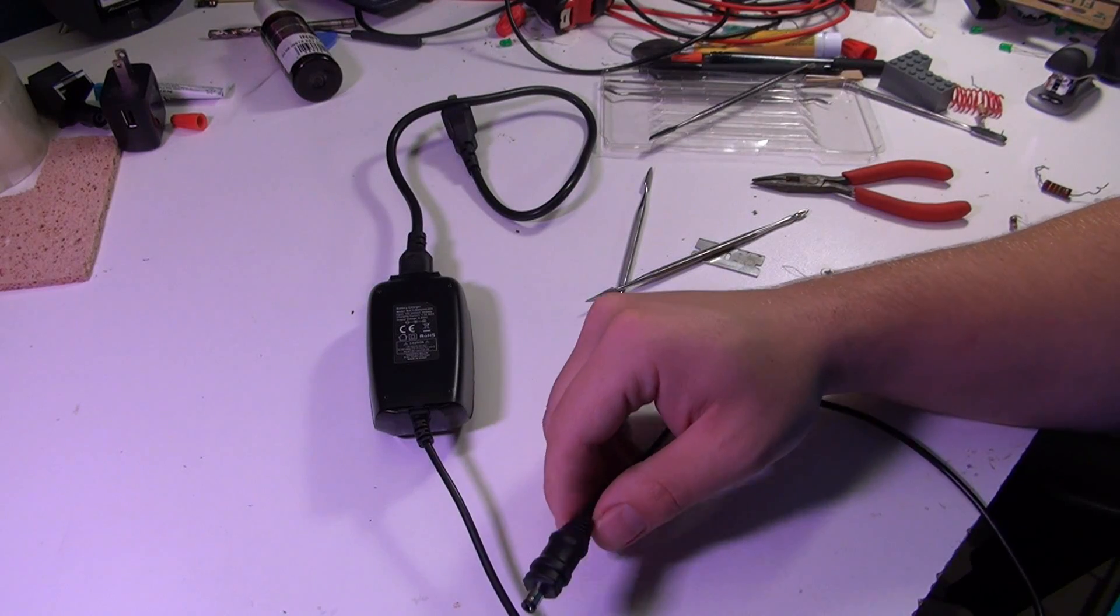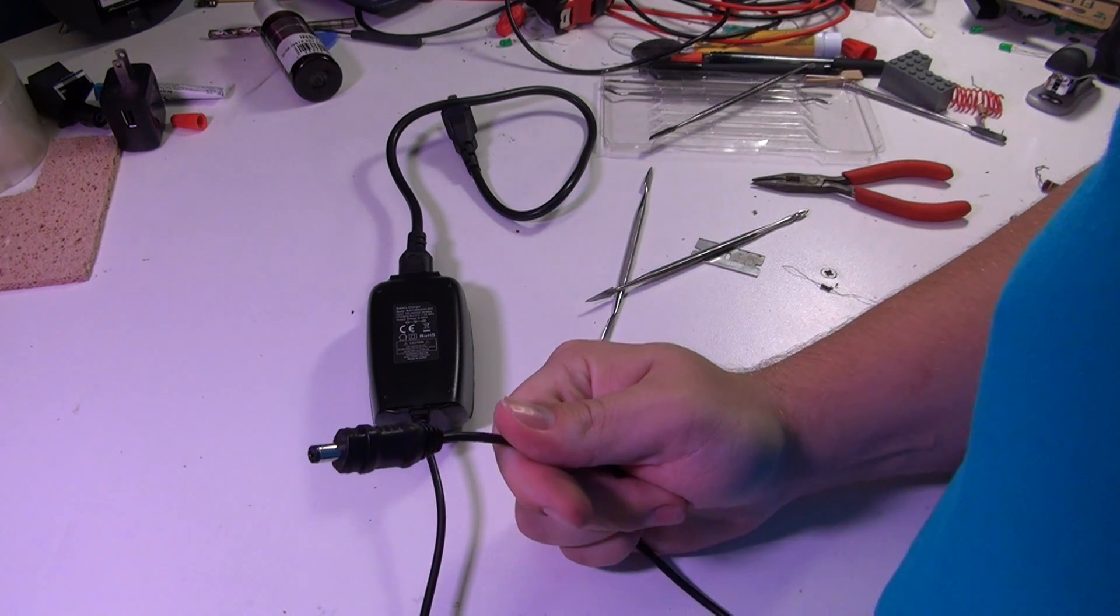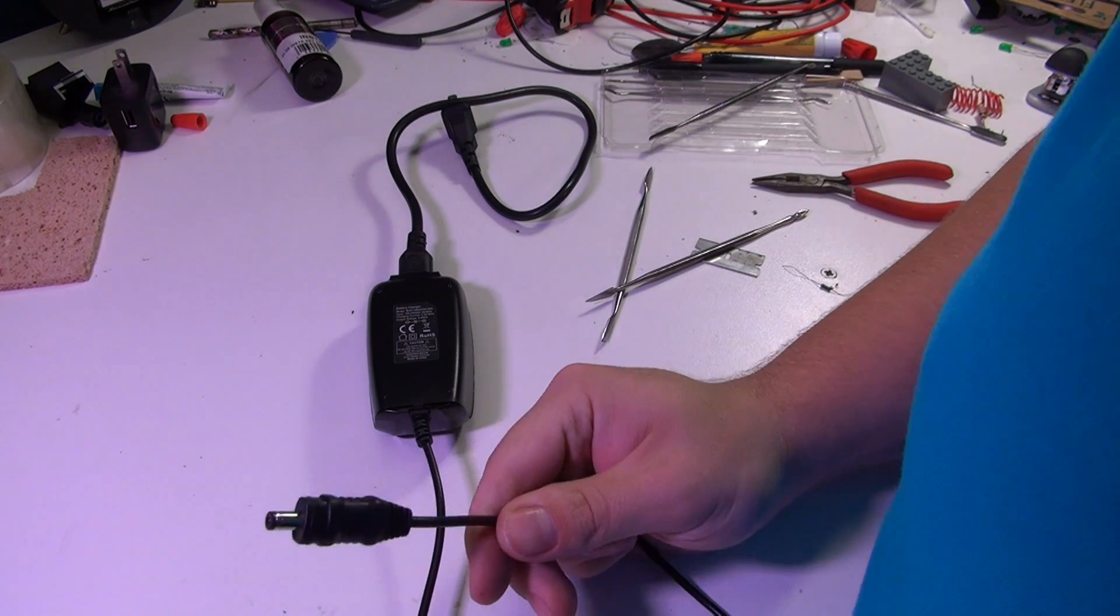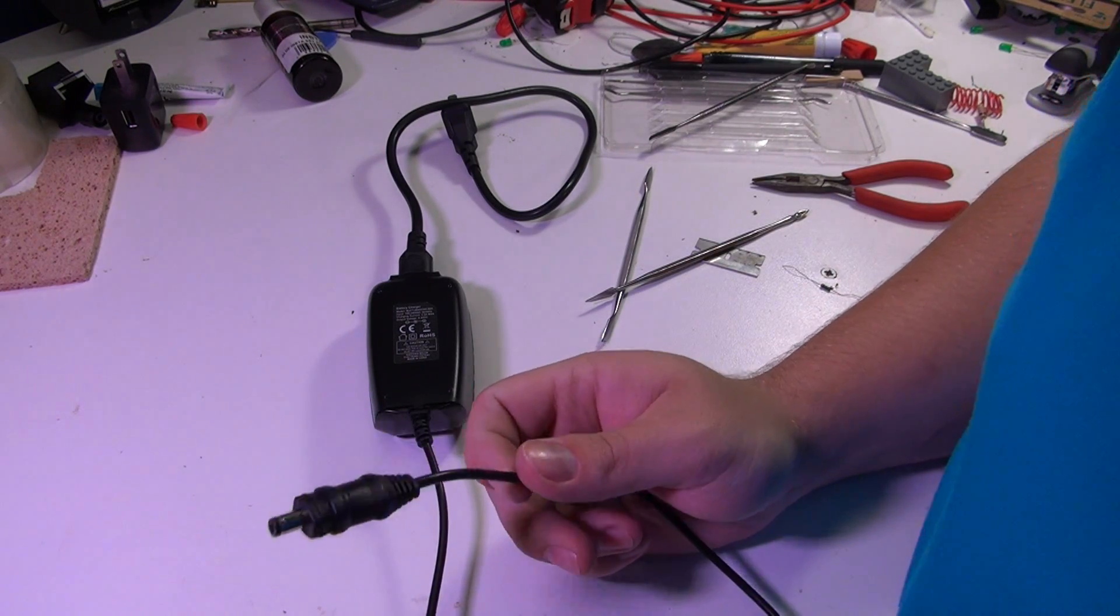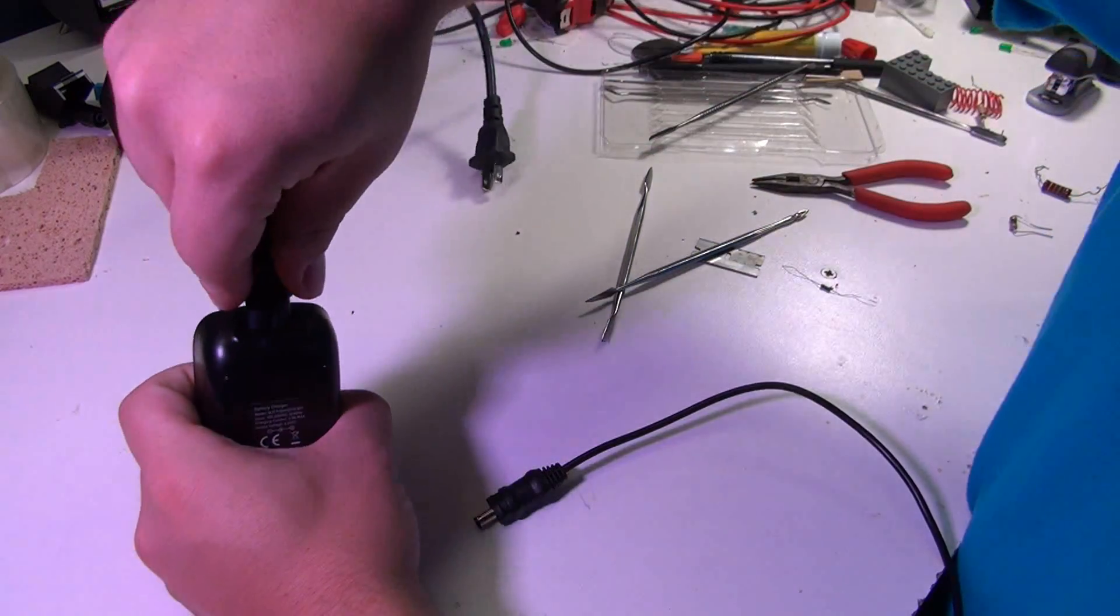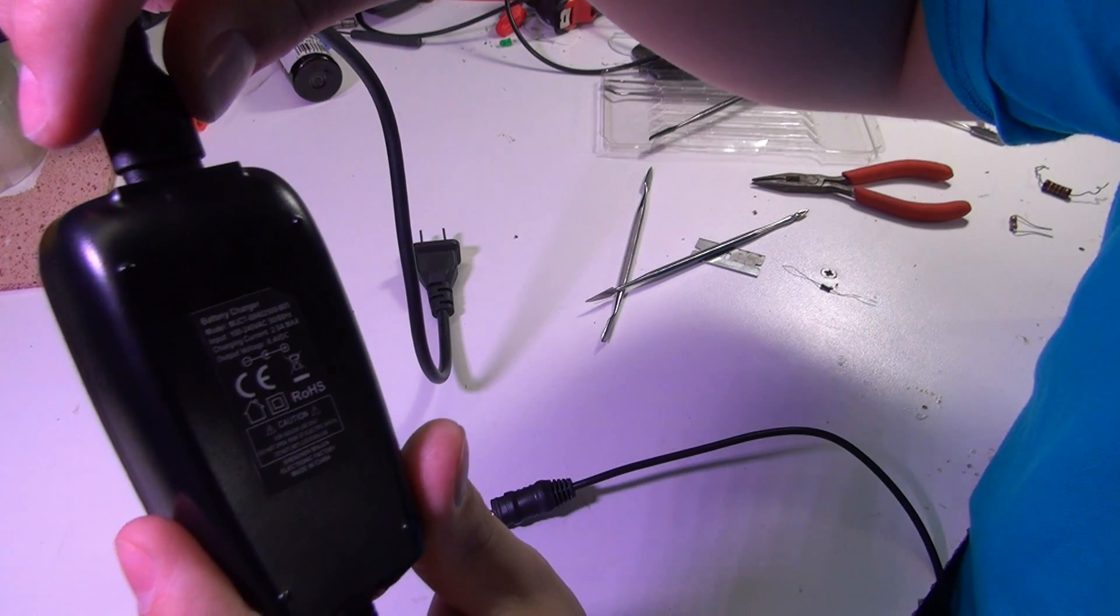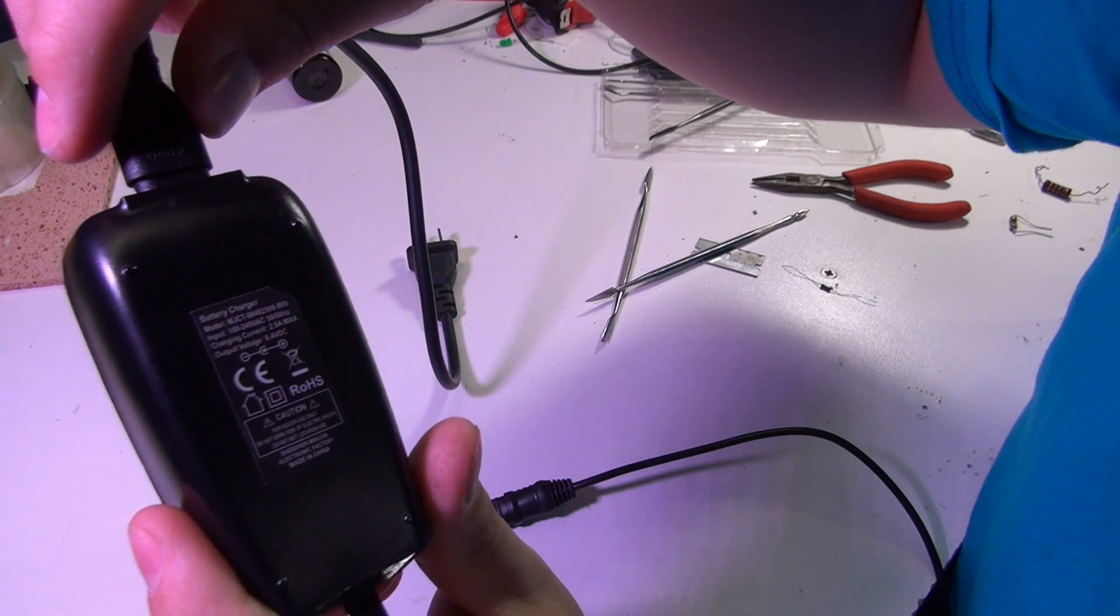So here we have the system's charger. We've got the barrel jack that mates with the female receptacle that is presumably watertight. We've got a mains adapter there. It's listed as outputting 2.5 amps at 8.4 volts DC.